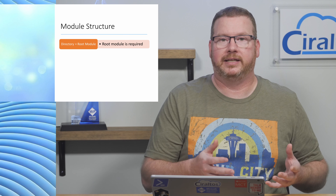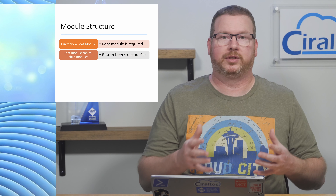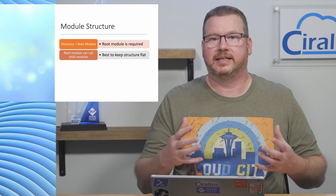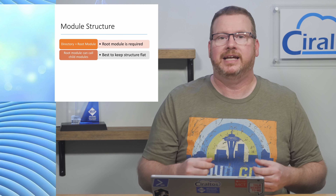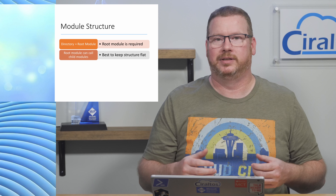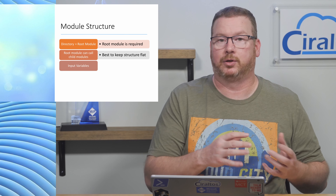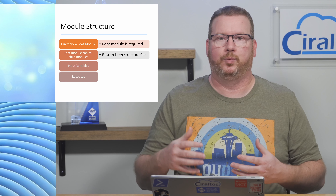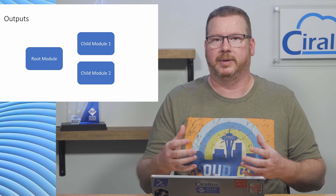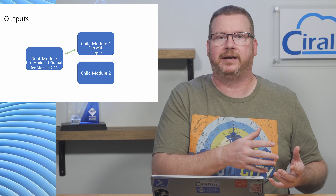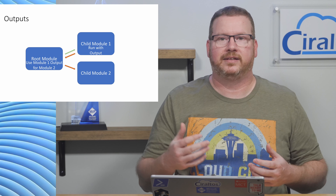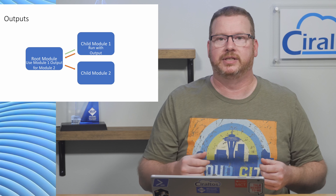A module is contained in directories. We've already created modules — the root module we created in previous videos was a module. All projects start with a root module, and we can call child modules from within it. The child module is the container for other resources. The root module can call child modules, and those can have child modules as well, but it's best to keep the module structure as flat as possible. A module will have input variables, resources, and outputs. When we call a child module, it runs in its own environment — output from the module is not passed back to the parent module by default. We can tell the child module to return data to the root module with outputs.